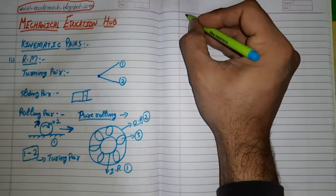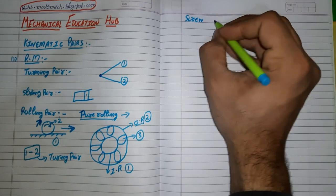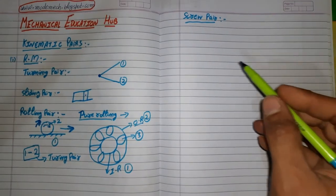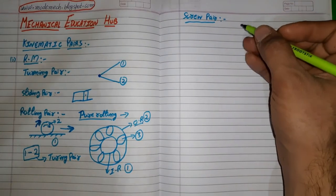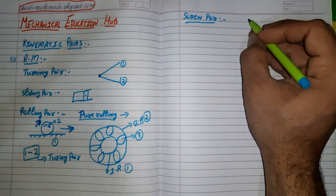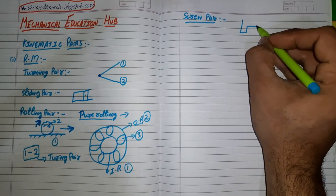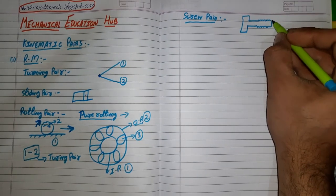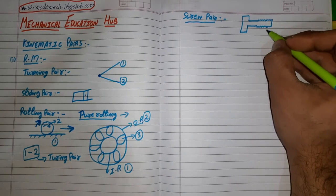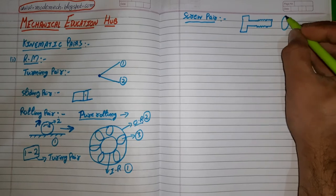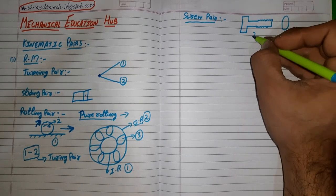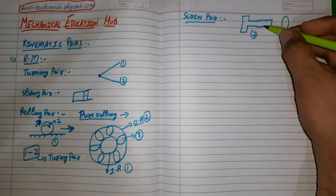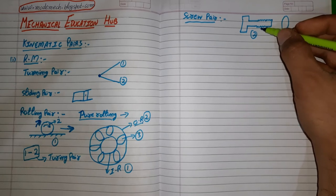Next in this category, we have the screw pair. When the relative motion between two bodies occurs over the threads, it forms a screw pair. A nut and bolt is the best example: the nut is body one, the bolt is body two, and when the nut moves over the threads of the bolt, it forms a screw pair.